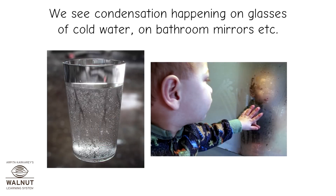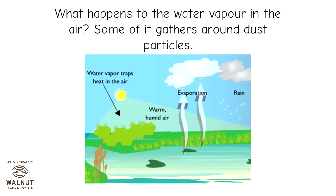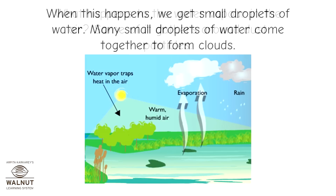We see condensation happening on glasses of cold water, on bathroom mirrors, etc. What happens to the water vapor in the air? Some of it gathers around dust particles. When this happens, we get small droplets of water. Many small droplets of water come together to form clouds.